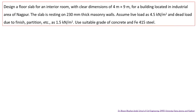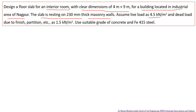Let us discuss the problem statement. The problem is to design a floor slab for an interior type of room — that means it is not directly exposed to weather conditions — with clear dimensions 4 meter by 9 meter. The building is located in an industrial area and the slab is resting on masonry walls, so it is a simply supported slab. We can assume a live load of 4.5 kN per meter square.